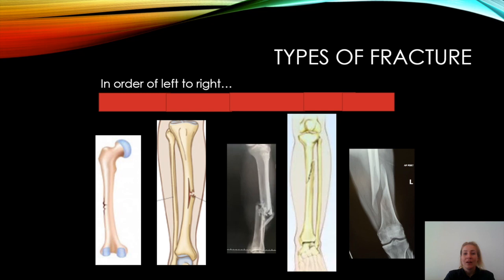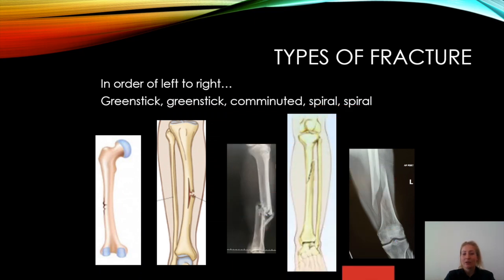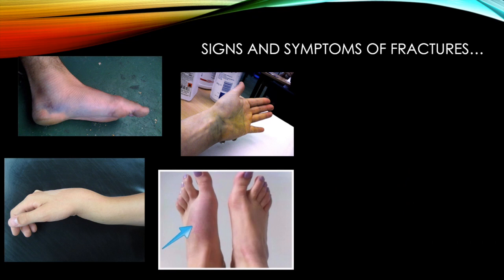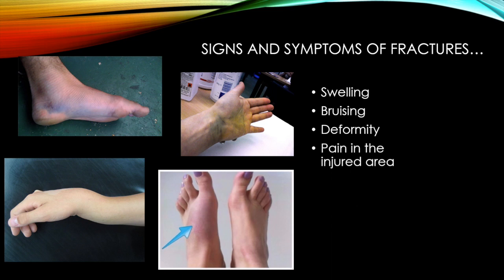Our final one here is buckle. See if you can write down, left to right, the correct type of fracture for these five different pictures — pause the video and unpause when you are ready. The answers are: greenstick, greenstick, comminuted, spiral, and spiral. If you wrote open and closed in there as well, that can be a bonus for you. I do apologize if you have a bit of a weak stomach — here are some pictures of fractures and you'll be able to see the signs and symptoms of different fractures.